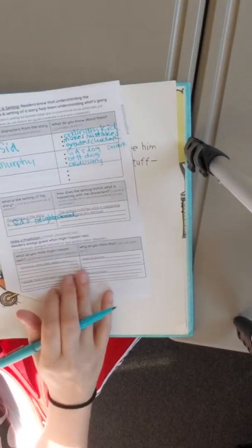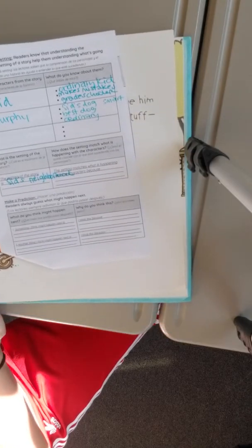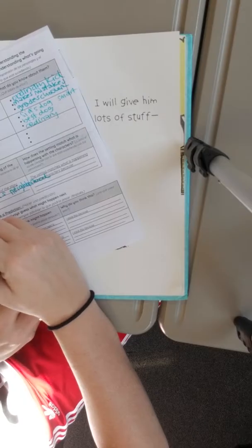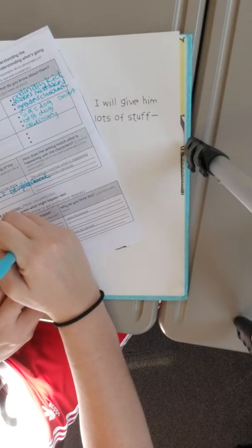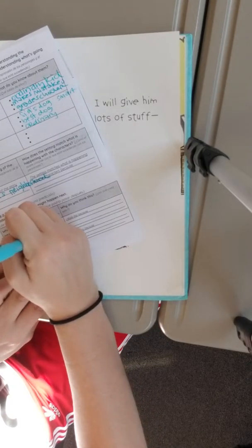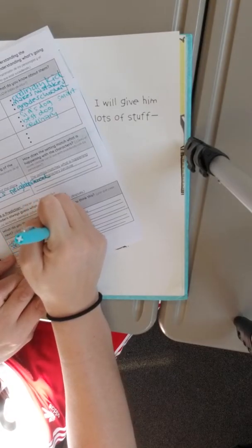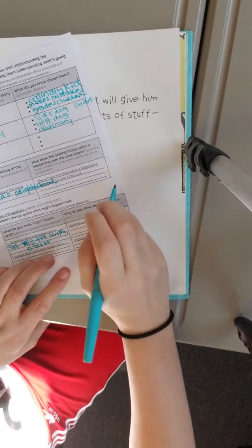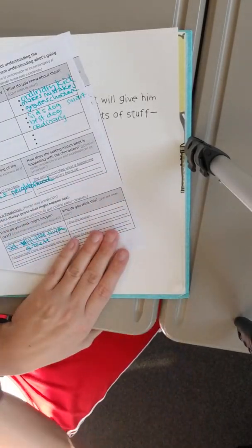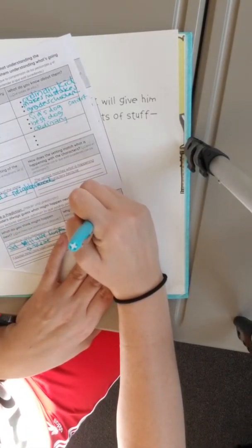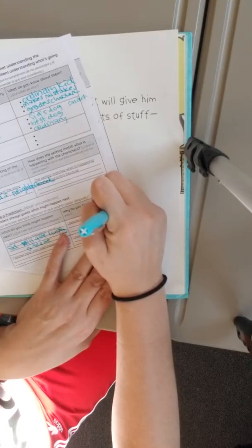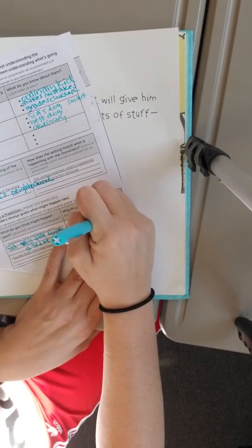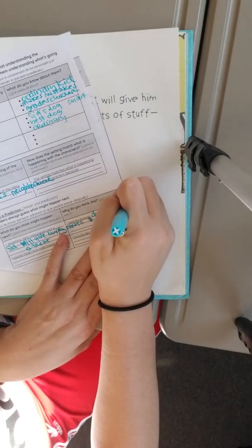Readers always guess what might happen next. What do you think might happen next? Something I think might happen next is Sid will give Murphy a treat. I think this because I know that dogs like treats, and when they do tricks like begging, they get treats. Dogs like treats and do tricks to get treats.